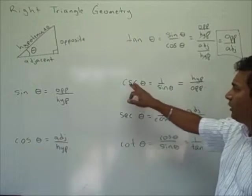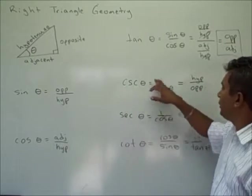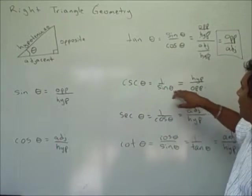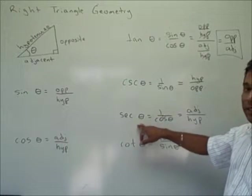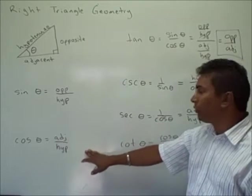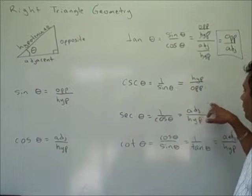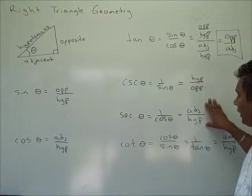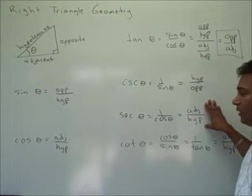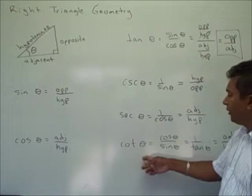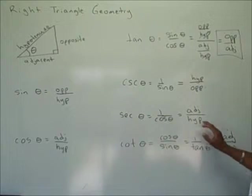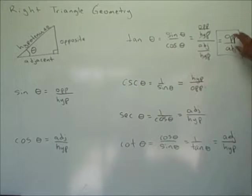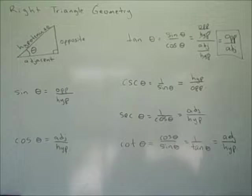Cosecant theta is the inverse of sine, so it's one over sine, which makes it the hypotenuse over the opposite. Secant theta is the inverse of cosine, which makes it one over cosine theta, or the hypotenuse over the adjacent. Cotangent theta is cosine theta over sine theta, the inverse of tangent theta, which makes it the adjacent over the opposite.